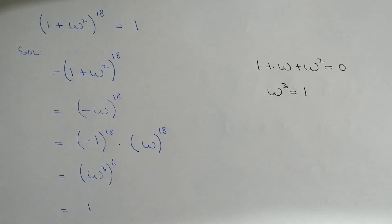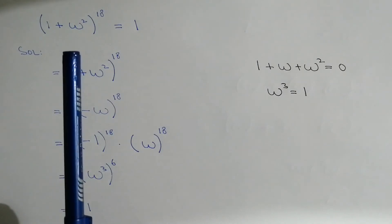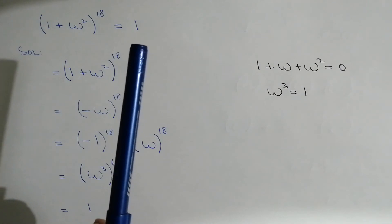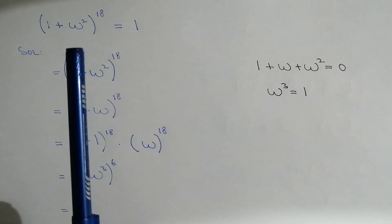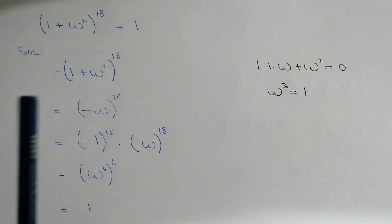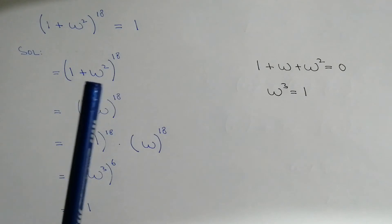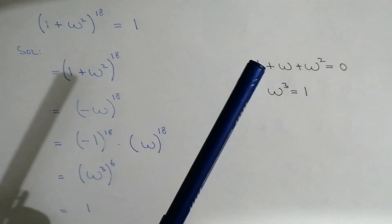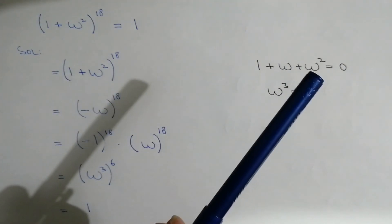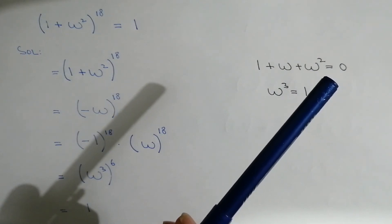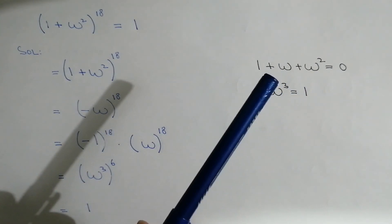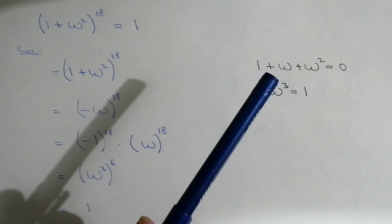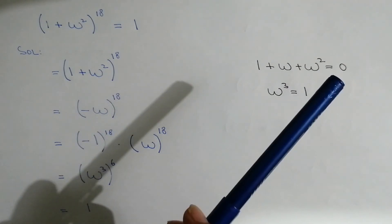Now here we have another problem: 1 plus omega square, whole power 18, is equal to 1. We will take the left hand side, that is 1 plus omega square whole power 18. We know that 1 plus omega plus omega square is equal to 0, so we will use this property: 1 plus omega square can also be written as minus omega.